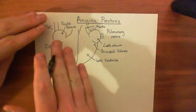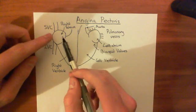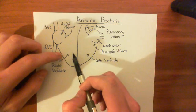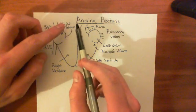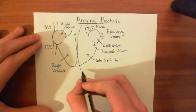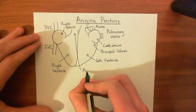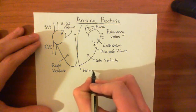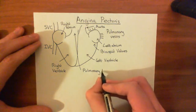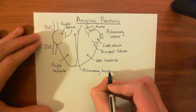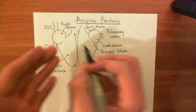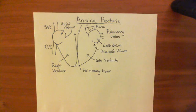Venous blood comes into the right atrium. The right atrium contracts and pushes the blood into the right ventricle, which then contracts, expelling blood out of the pulmonary trunk. The blood goes through the lungs, gets oxygenated, and comes back via the pulmonary veins into the left atrium. The left atrium pumps it into the left ventricle, which then pumps it out through the aorta.